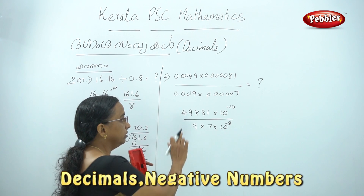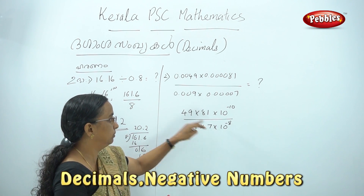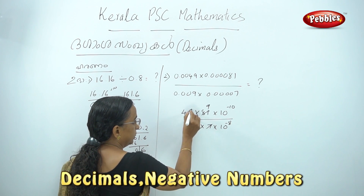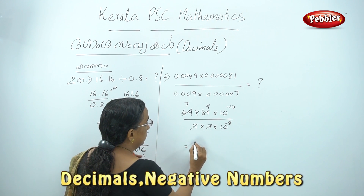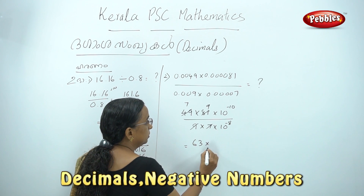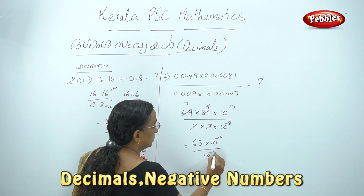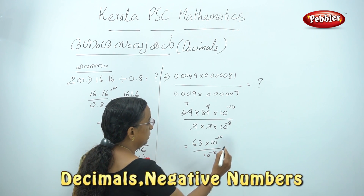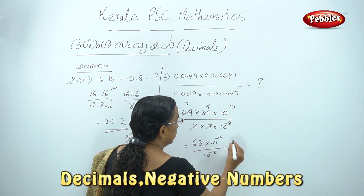We are going to get minus 10 minus 8. Now, let us set elements here. Here we have 9. We can have 3. Now we have to start this. We start this. We will start this.